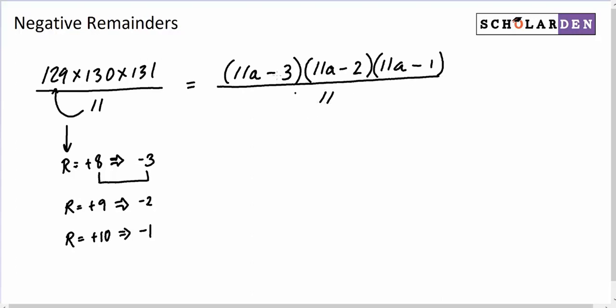All over 11. Now, same logic as before. When we multiply these all out, we're going to get a bunch of terms. And then the last term will be the only one that we don't know for sure is divisible by 11. And that's going to be negative 3 times negative 2 times negative 1. That consists of just these last terms multiplied together.